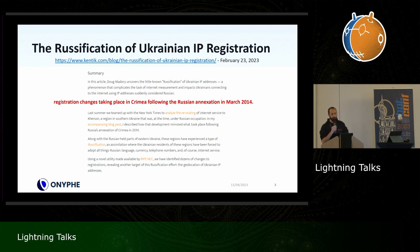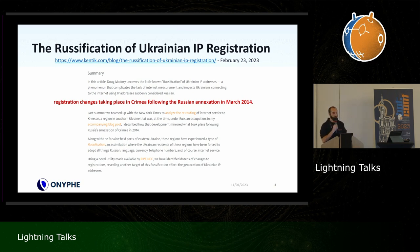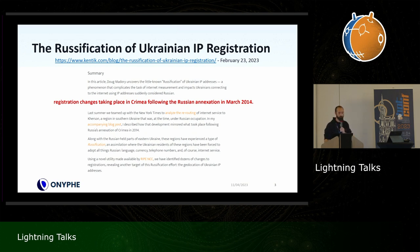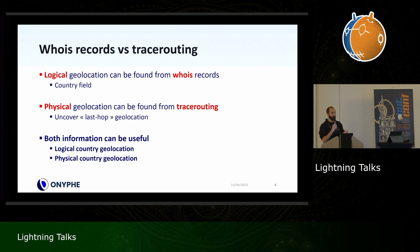I read an article about the re-attribution of Ukrainian IP registrations. Beginning March 2014, when Russia started to invade, they updated WHOIS records to remove UA and replace it with RU. This can be found in historical WHOIS records. So an IP address may be physically in one country but logically registered somewhere else. It's important to keep track of both the logical geolocation via WHOIS records and the physical geolocation, which you can obtain via traceroute by identifying the last hop.